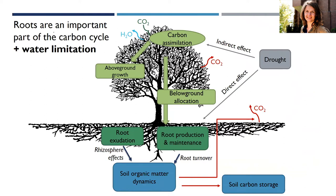Closing the stomata means less CO2 can be taken up, so the tree may be limited in carbon resources and therefore also have limited resources to spend on root production. These two opposing effects make it hard to predict what would happen to fine root growth dynamics below ground.